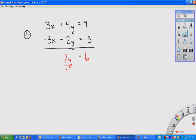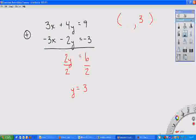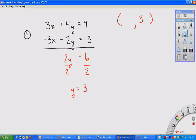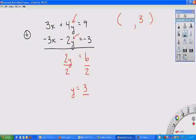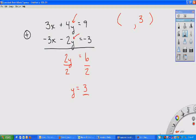So when we add them together, what do we get? Well, 3x plus negative 3x is 0. It got eliminated, which is what we want. 4y plus a negative 2y is 2y. You got 9 plus negative 3, which is 6. Divide both sides by 2, and you got y equals 3. So again, in my solution set, the y value is going to be 3.